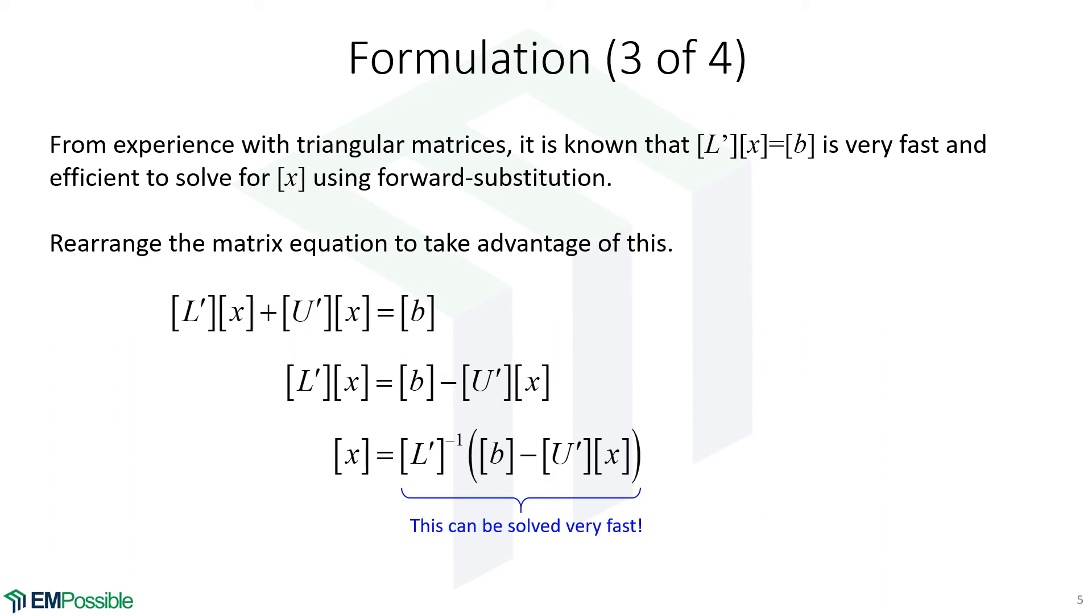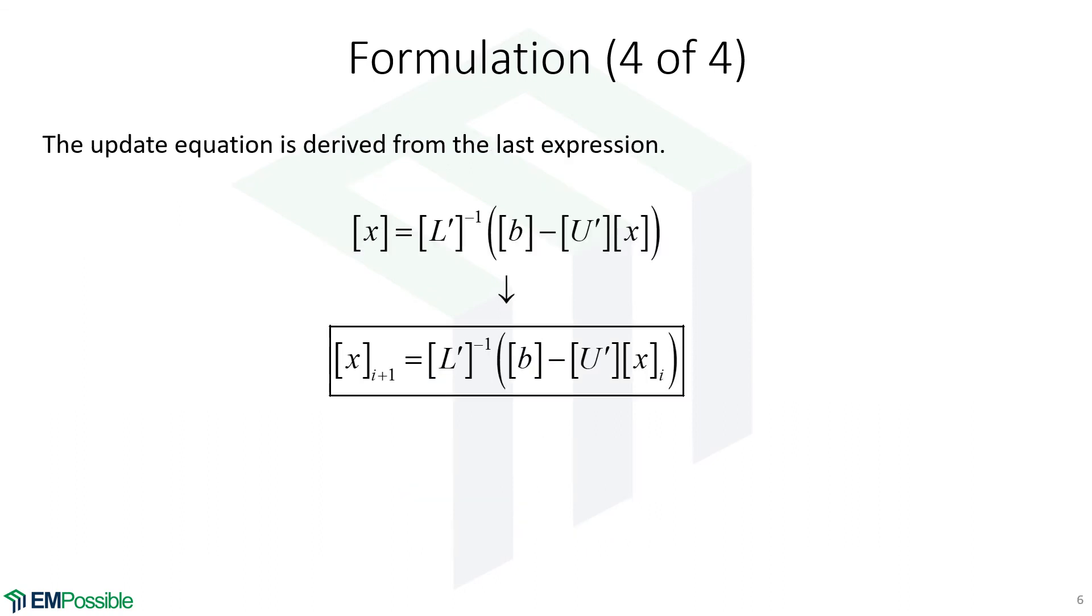Here's the final form of our update equation. We're just writing this a slightly different way, where we'll put an i subscript on X, meaning this is the X from the current iteration. We apply this equation to calculate X from the next iteration. Remember, L and U are just splitting our original A matrix in half. We can put numbers to those, we can put numbers in B. That's a very fast thing to iterate. It overcomes the limitation of A having to be a diagonally dominant matrix.